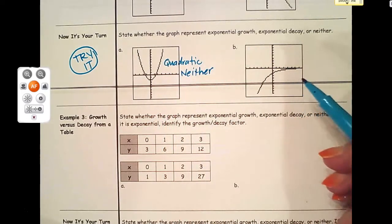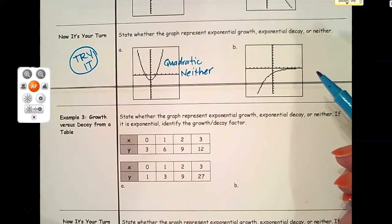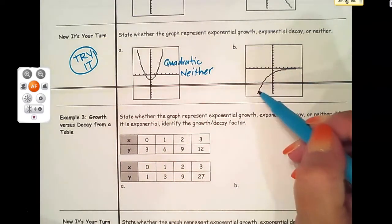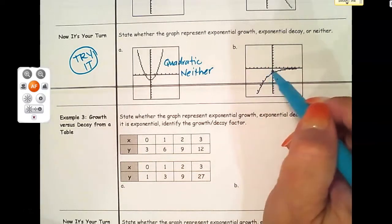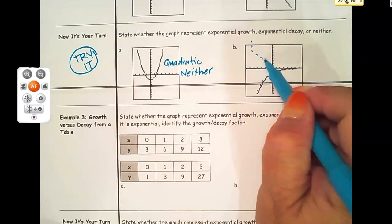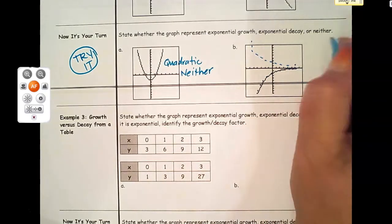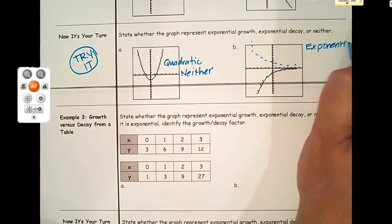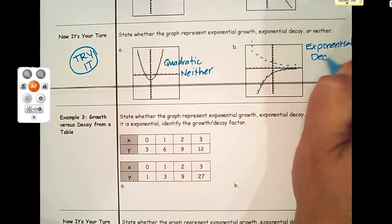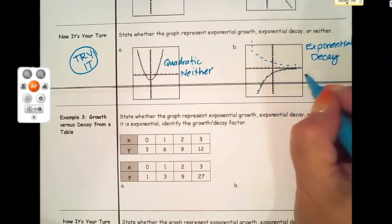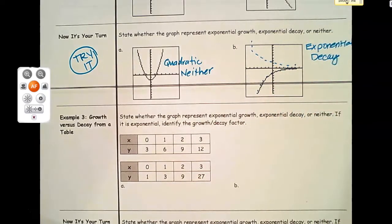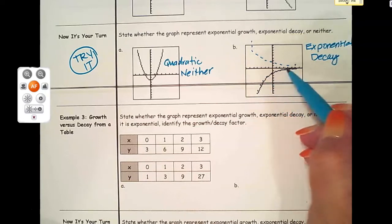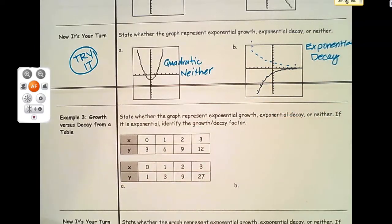Letter b is a little bit tricky. Even though our graph from left to right is increasing, the parent function of that graph is our exponential decay graph. What happened here is that it must have had an a value that was negative, which caused it to flip over the x-axis. But that's the shape of our exponential decay.